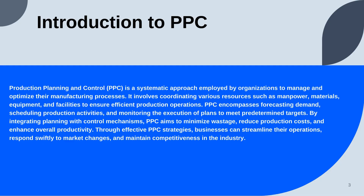Production Planning and Control is a fundamental aspect of manufacturing management that encompasses the coordination of resources, processes, and activities to optimize production efficiency and meet organizational objectives. It involves forecasting demand, scheduling operations, and ensuring the timely availability of materials and resources needed for production. PPC serves as a bridge between strategic planning and day-to-day production activities, aligning production goals with overall business objectives. Through PPC, companies can minimize wastage, reduce production costs, and improve delivery times by synchronizing production schedules with customer demand. Ultimately, PPC facilitates the systematic execution of production plans, enabling companies to maintain competitiveness and adapt to market changes, achieving operational excellence.